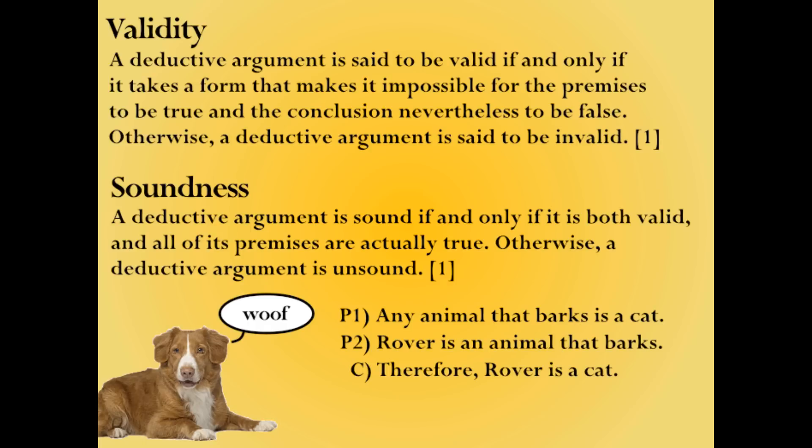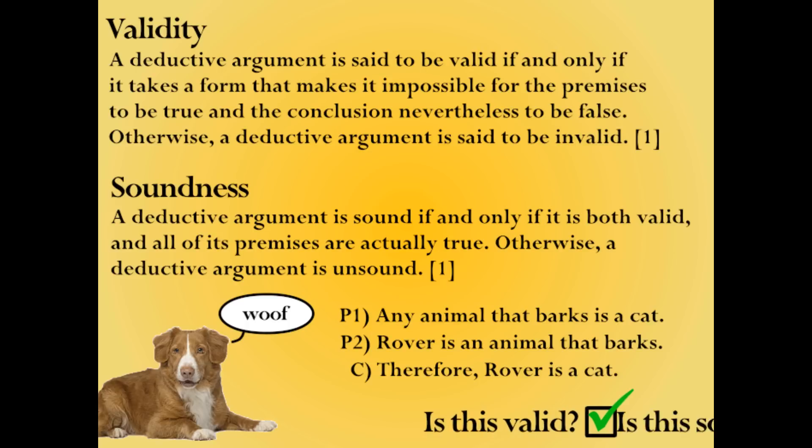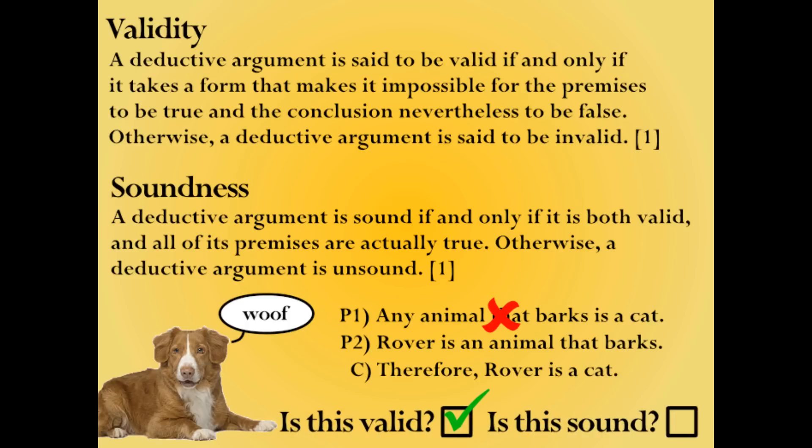Now, of course, this argument is clearly wrong, but let's analyze it for validity and soundness. Firstly, let's consider validity. If we assume the truth of the premises, the conclusion logically follows. Therefore, this argument is valid. On the other hand, premise one is demonstrably false in reality. Therefore, the argument is rendered unsound.